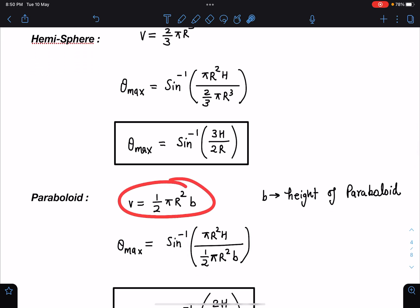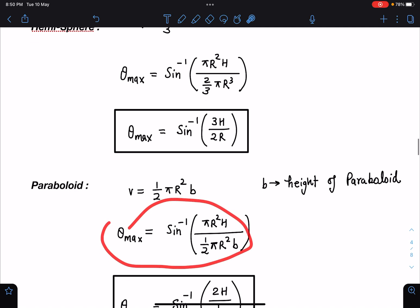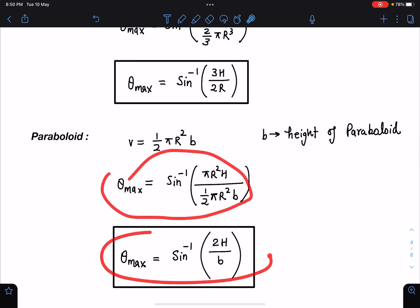Paraboloid: half πr² into height, that I am taking as b because h I have taken from the center of area of the flat surface from the free liquid surface. So this θ max from here you will be getting sin inverse of 2h by b.